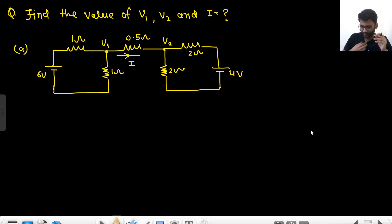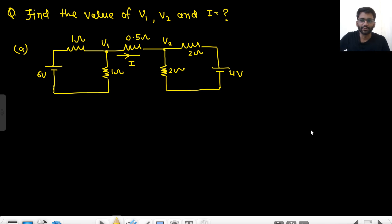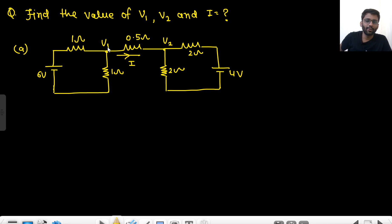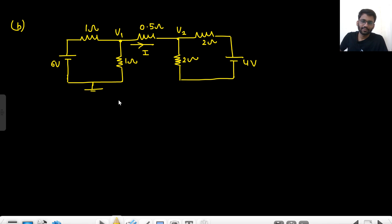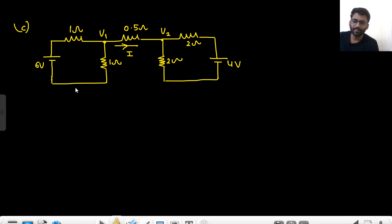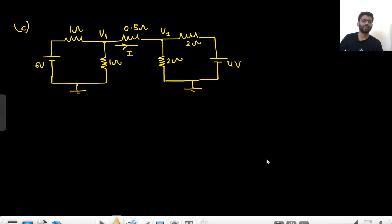Okay, so let's see this question. That's a very interesting question and many times students get confused. I will deal with three circuits here. In all the circuits you need to find the value of V1, V2, and I. The first circuit, the second circuit is the same but with ground mentioned, and the third circuit is the same but with ground mentioned at both sides — we will see what changes it brings.